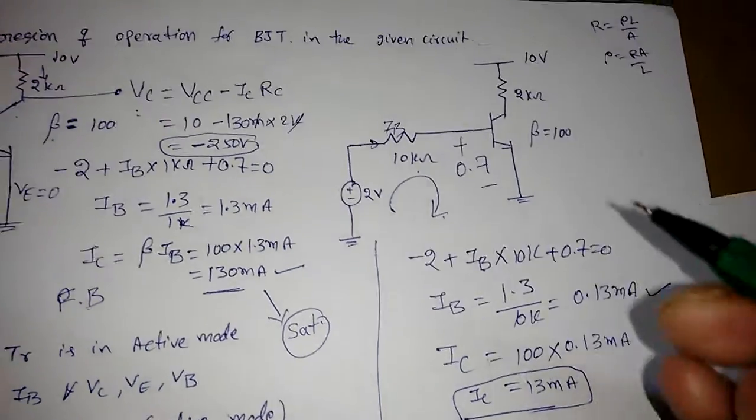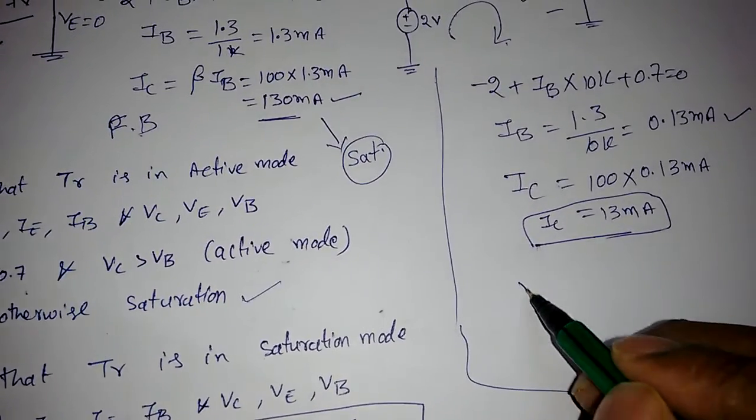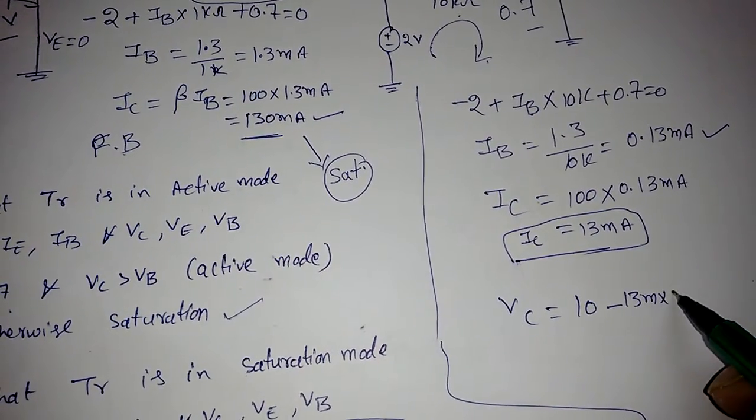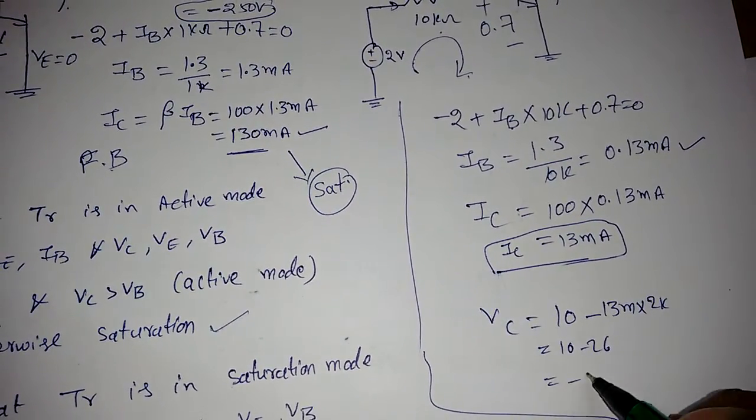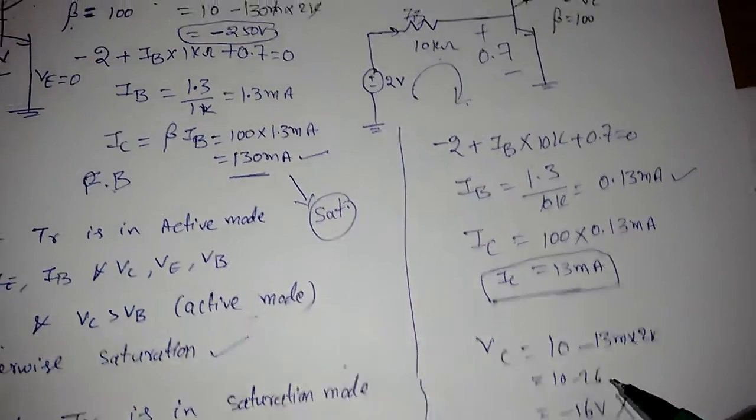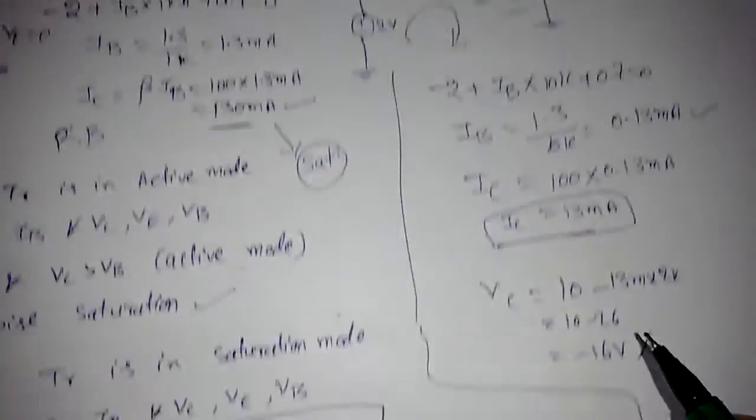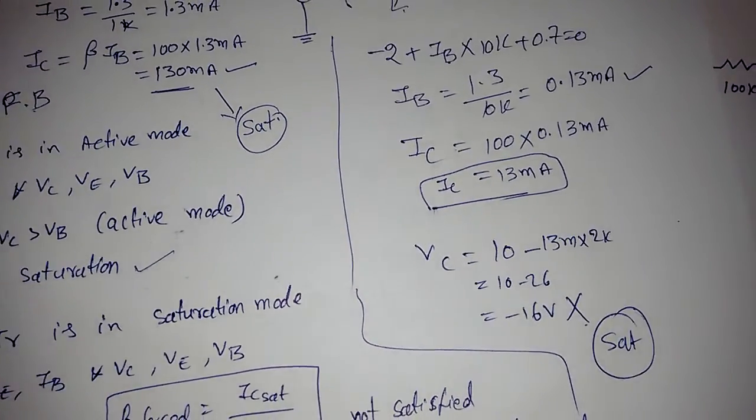What is VC? VC is 10 - 13mA × 2kΩ, which becomes 10 - 26 = -16 volts, which is not possible. That means this junction is also in forward bias, so the transistor is in saturation only.